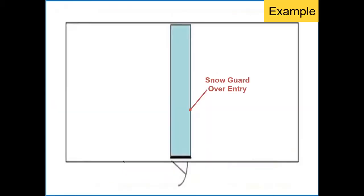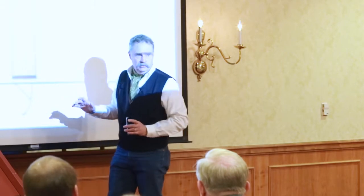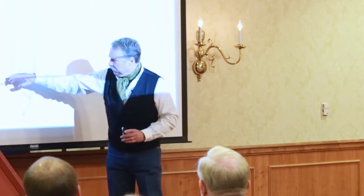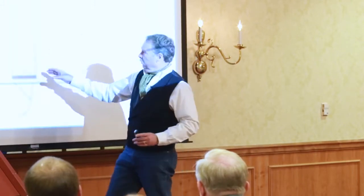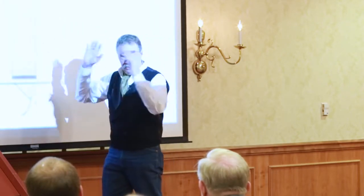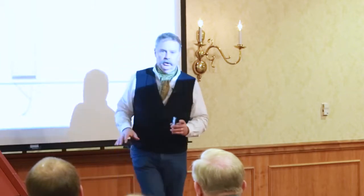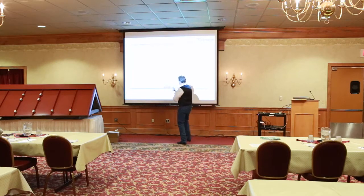Here's another mistake that happens often: miscalculating tributary loads. Say we don't want to protect the whole building eave — we just have one door and we want to protect that door. So we only want to use eight feet, stick a color guard up there, and the tributary load looks like that — we do the engineering and we're good. But what is the tributary load to this short section of snow guard?